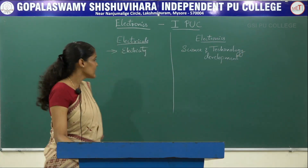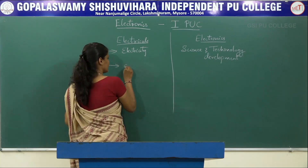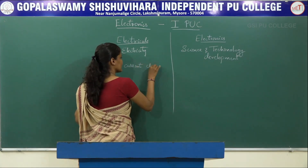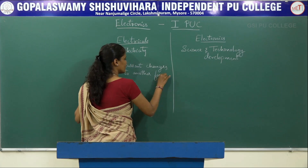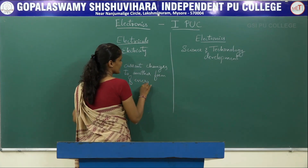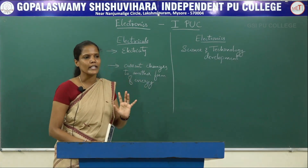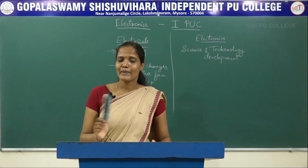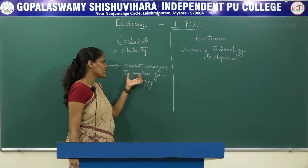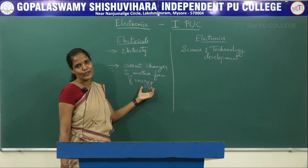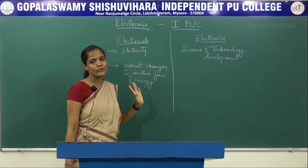Coming to the second difference: in electricals, the current changes to another form of energy. For example, if I consider a tube light, the current energy is converted into light energy. Coming to a fan, current energy is converted into mechanical energy. So in electricals, current changes to another form of energy — that can be heat energy, light energy, or whatever it is.